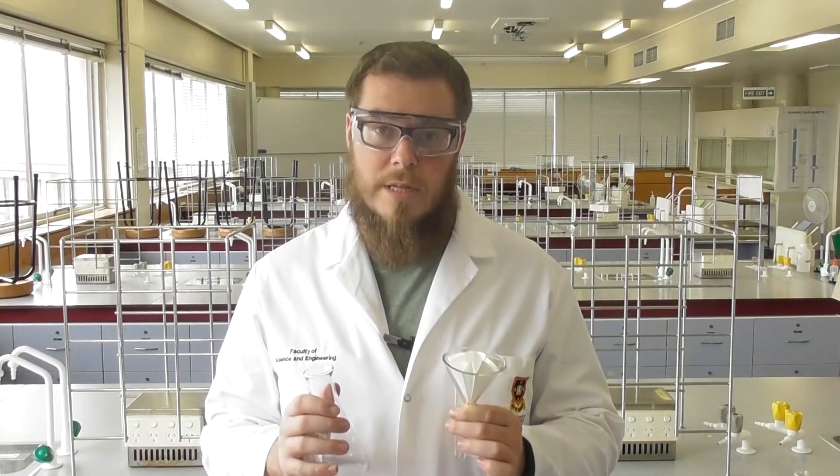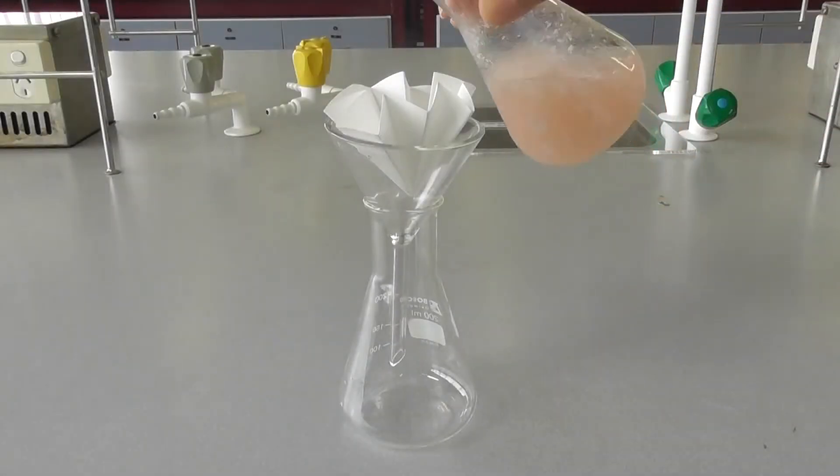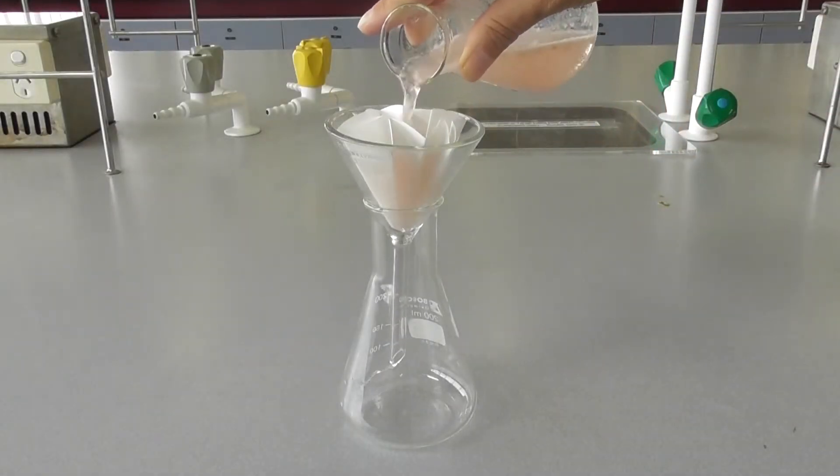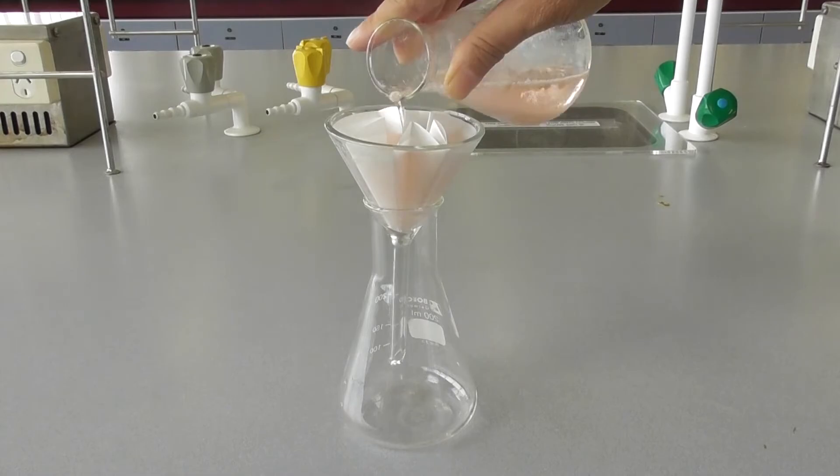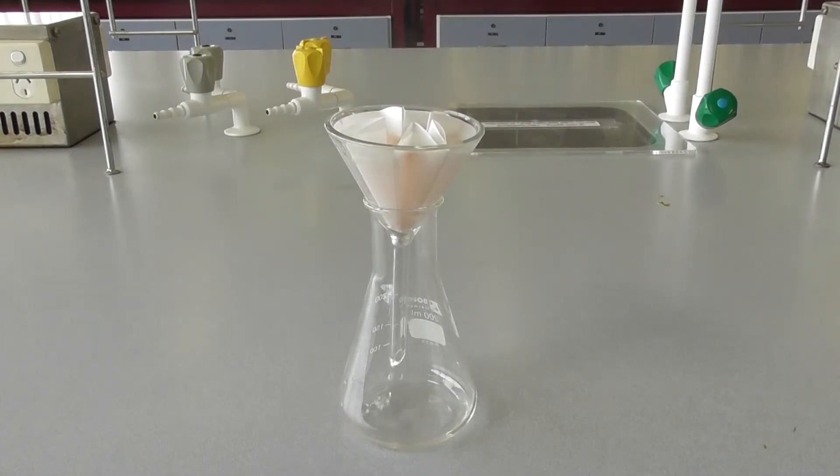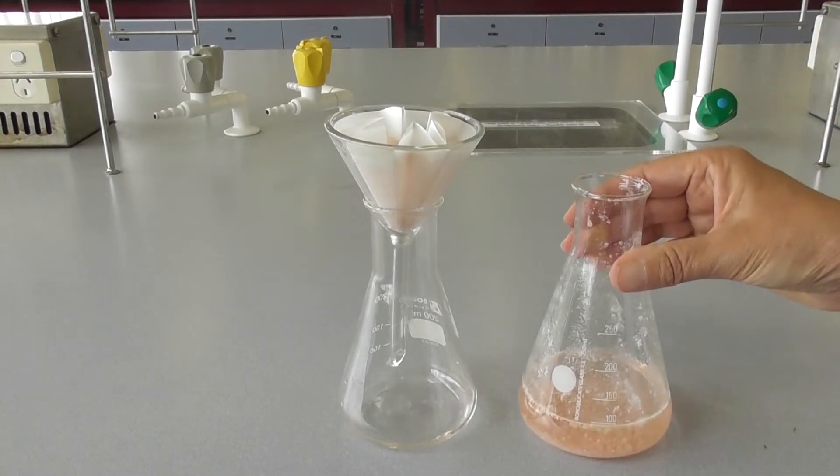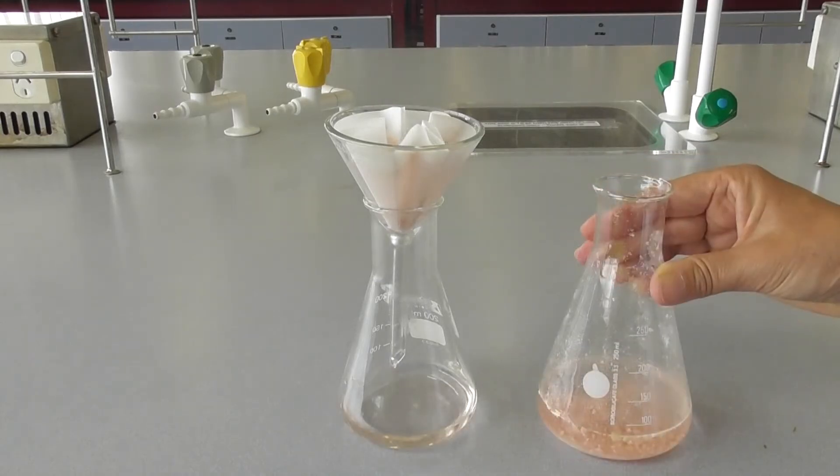In this video, we're going to show you how to carry out a gravity filtration. Gravity filtration is a method of filtration where a liquid is drawn through a piece of filter paper under its own weight. This is generally used to isolate or collect a liquid, removing solid impurities.